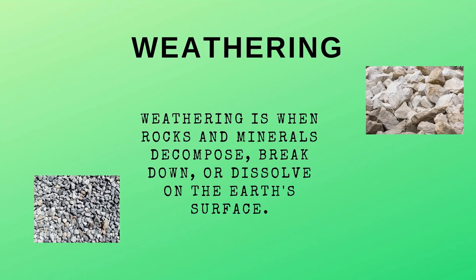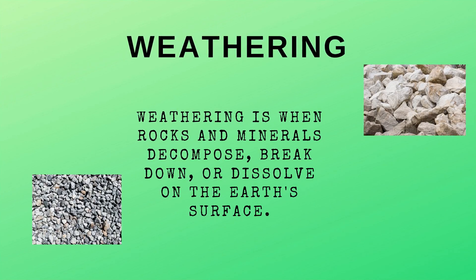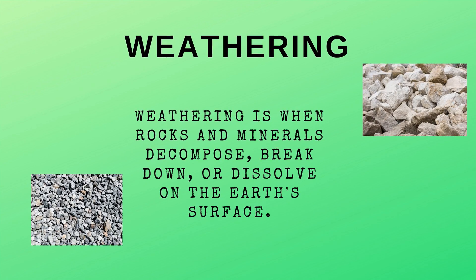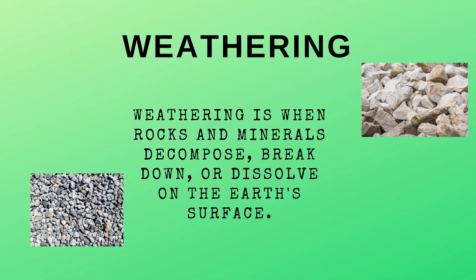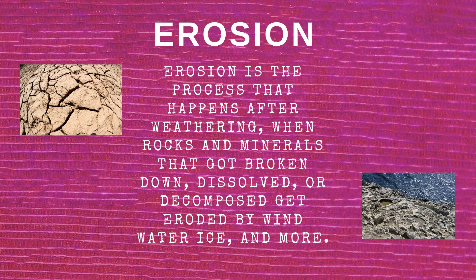Weathering is when rocks and minerals decompose, break down, or dissolve on the Earth's surface. Erosion is the process that happens after weathering, when rocks and minerals that got broken down, dissolved, or decomposed get eroded by wind, water, ice, and more.